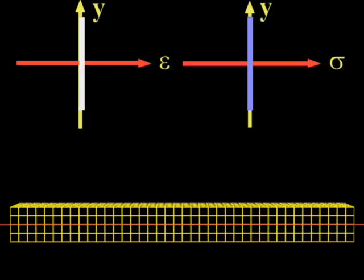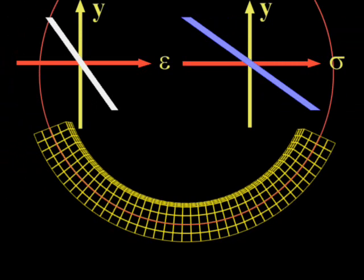When a beam made of an elastic material is bent, both the stress and strain increase with distance y from the neutral axis.